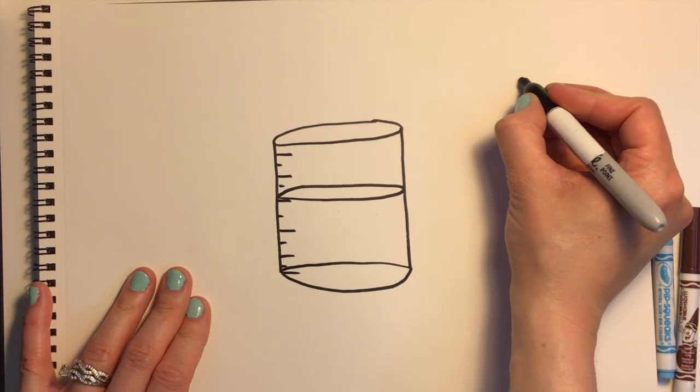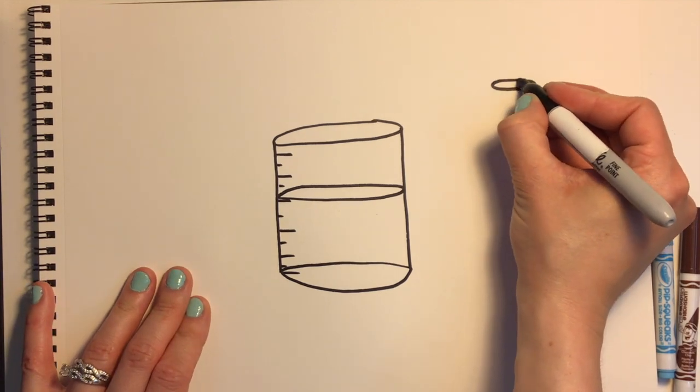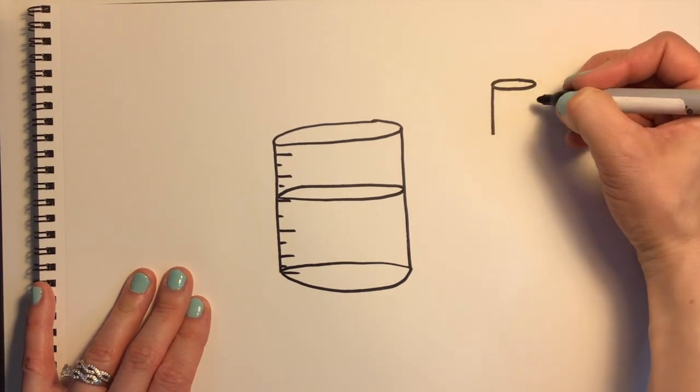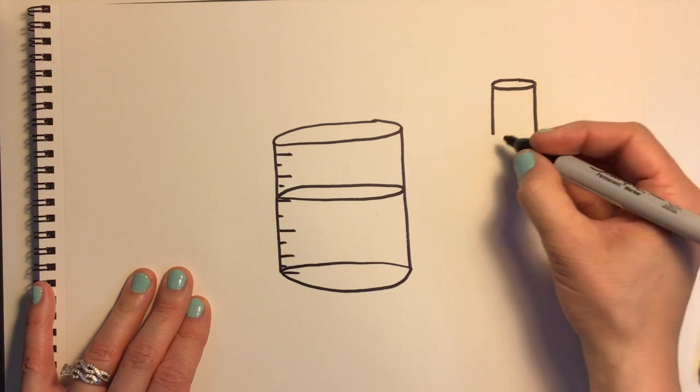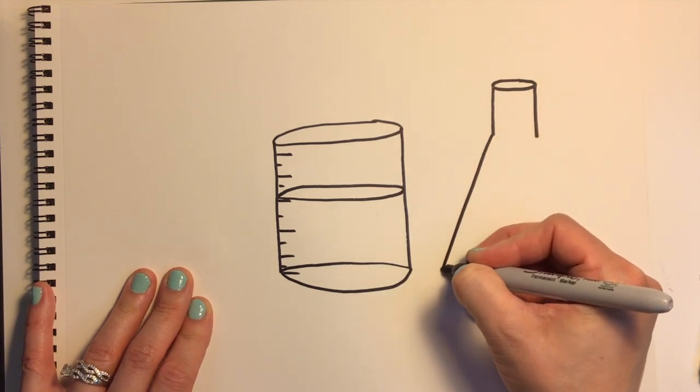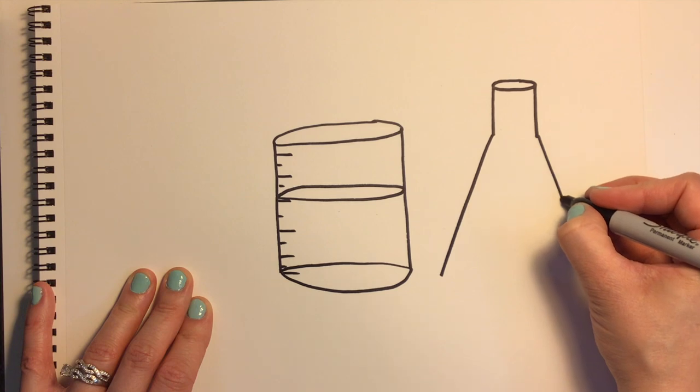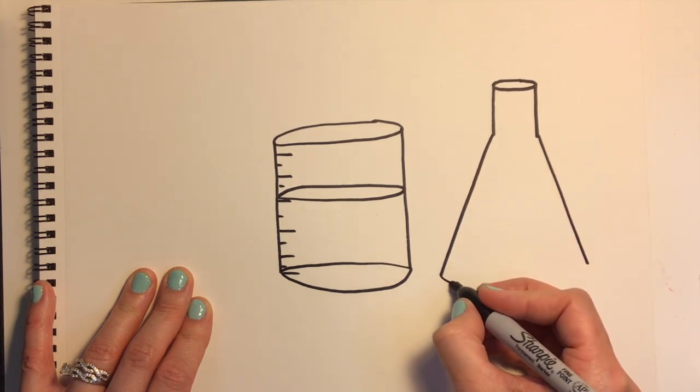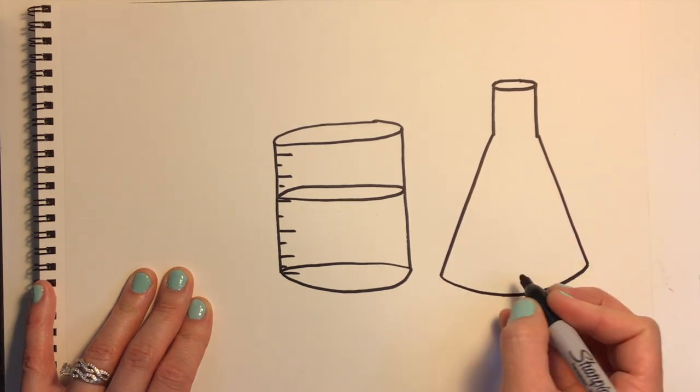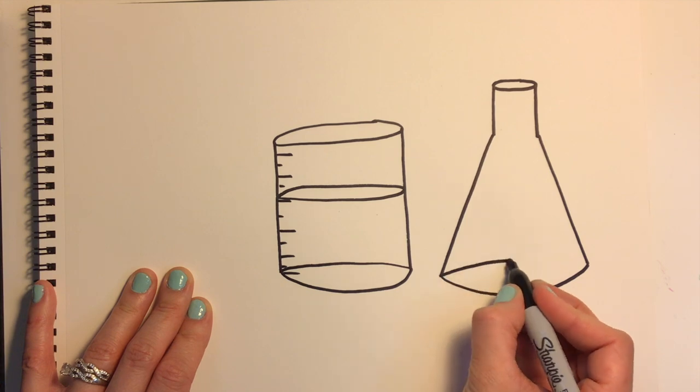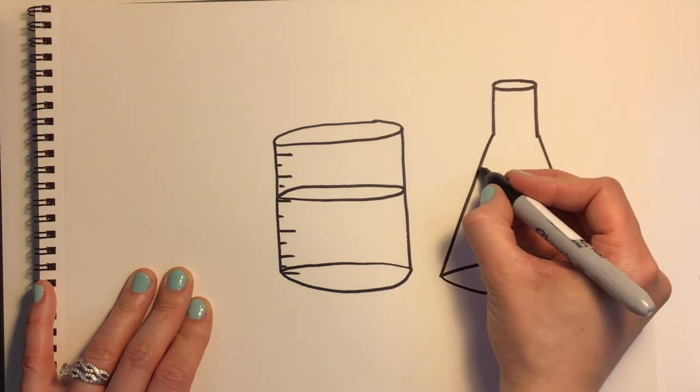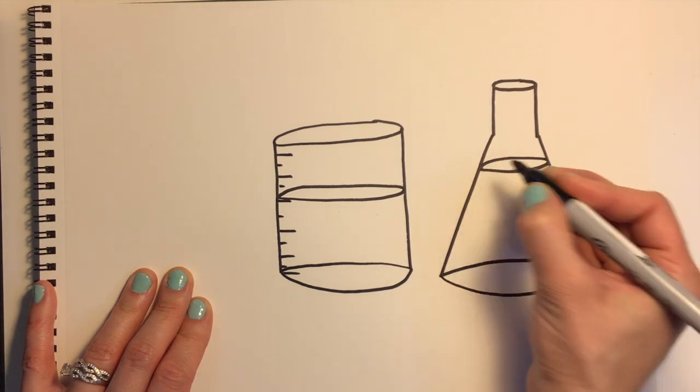Now let's draw a smaller flat oval over on the right. Two vertical lines again, a diagonal line to the left, a diagonal line to the right, and let's curve again to connect. Decide where you want your liquid to be and make a flat oval there.